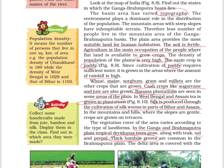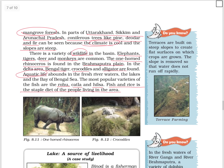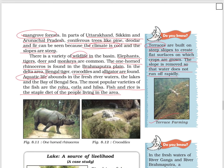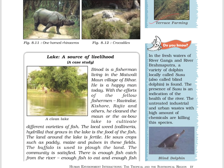Population density means the number of persons living in one square kilometer of area. Terraces are built on steep slopes to create flat surfaces on which crops are grown — the slope is leveled so water doesn't run off rapidly; this is called terrace farming. In the fresh waters of the Ganga and Brahmaputra, a variety of dolphins locally called susu, also called the blind dolphin, is found. The presence of susu indicates the health of the river, but untreated industrial and urban waste with high chemical content is killing the species.